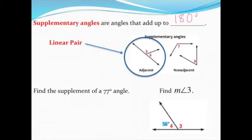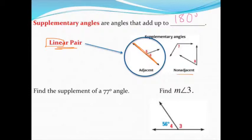Supplementary angles are angles that add up to 180 degrees. When supplementary angles are adjacent — right next to each other — we call them a linear pair because they make a straight line. But they may not always be adjacent; they may just be two angles that still add up to 180, though often we'll see them making a straight line.